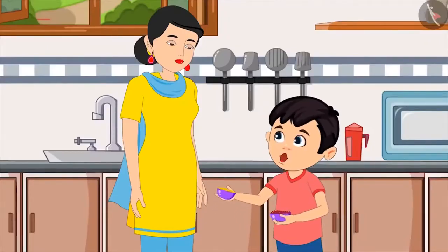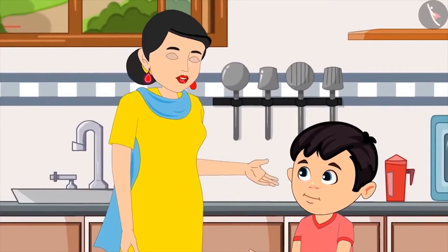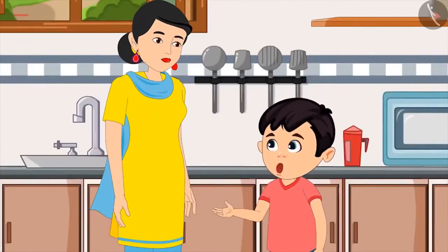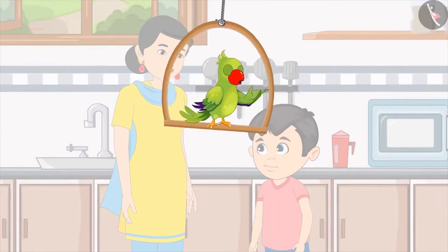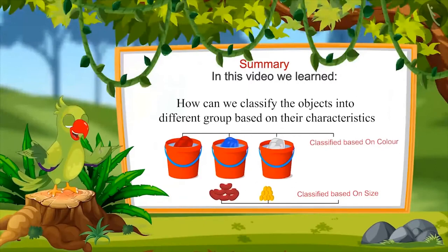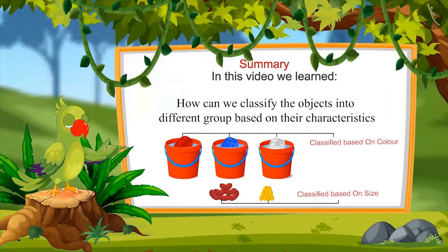So children, can you tell me what Chotu is doing? Yes, you people are absolutely right — he is classifying dal and rajma on the basis of their color and size and grouping them into two separate bowls. Here you go Mom — dal and rajma are separated. Very good Chotu, thank you. Now let me quickly make dal and rice for you. So children, did you enjoy seeing the examples of classification? In this video, we have learned how we can classify objects based on their characteristics like color and shape and thus create different groups. I hope you have enjoyed and understood this topic properly. Bye, friends.